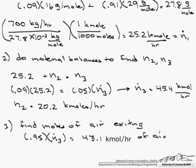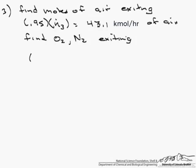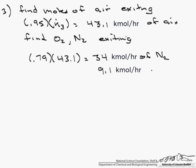So once we find the moles of air exiting, we can find the moles of O2 and N2 that are exiting. How do we do that? Well 79% of air is N2, and 21% of air is O2, and that's in mole fractions. So 0.79 of 43.1, which are the kilomoles of air exiting, equals 34 kilomoles of N2, and 43.1 minus 34 leaves us 9.1 kilomoles of O2.